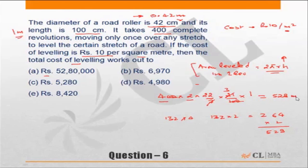square meters. So the area to be leveled is 528 square meters, and the cost of leveling is 10 rupees per square meter. The total cost becomes 5,280 rupees, choice C. This is a very common error. This error normally happens when you work in centimeters and forget to convert to meters. Or when you work in centimeters, you get the area in square centimeters and have to convert it